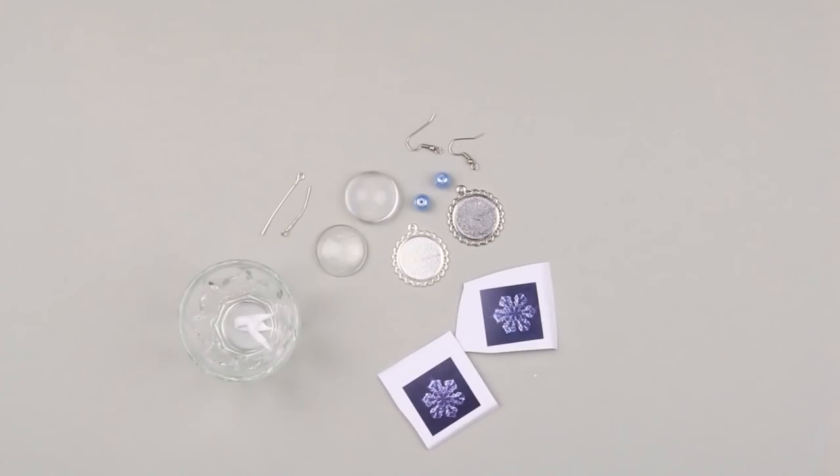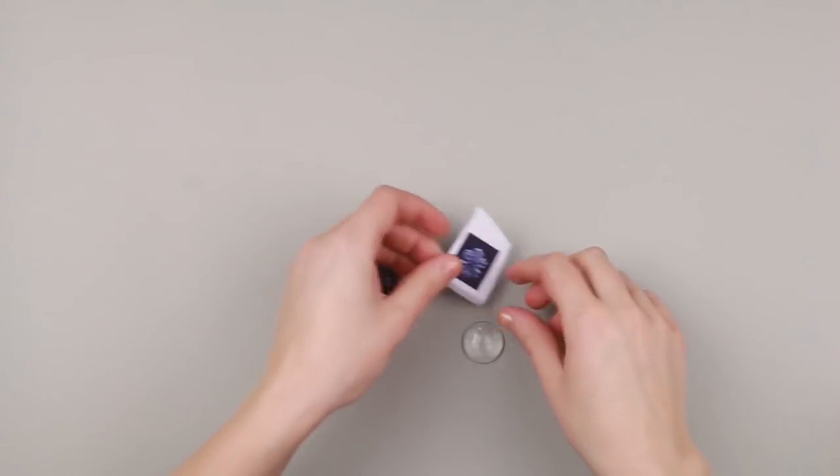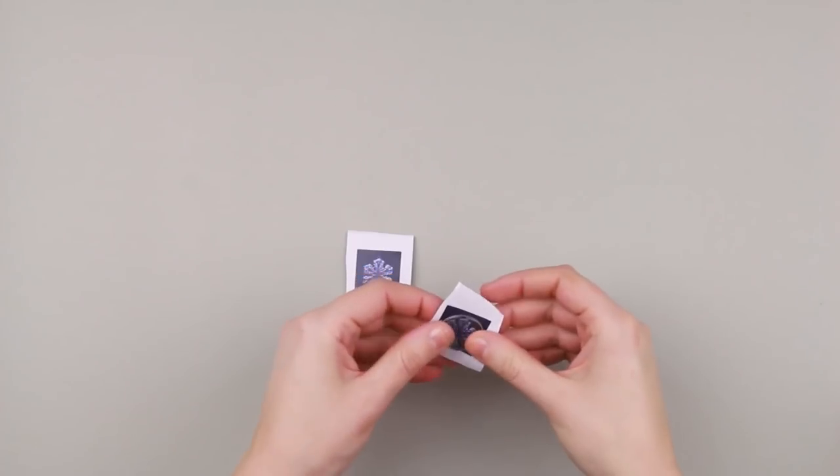Snowflake pictures, white acrylic paint, glue for glass, and a hot glue gun. Take printed pictures of snowflakes and apply to the glass lenses.